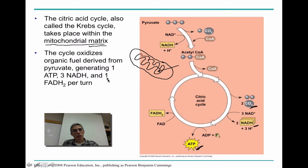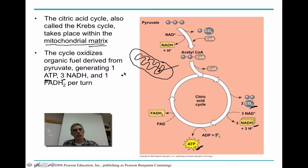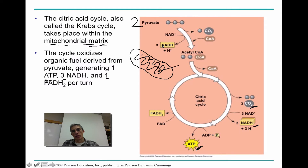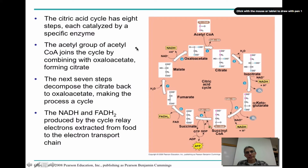Throughout this cycle, we get production of some CO2, some NADH, some ATP, and some FADH2. From one pyruvate molecule entering the system via acetyl-CoA, we get one ATP produced, three NADHs, and one FADH2 per turn. Remember there are actually two turns of this Krebs cycle or citric acid cycle, because at the end of glycolysis we produced two pyruvates, not just one. So this cycle is going to turn twice. Next we'll go through the eight steps of the Krebs cycle.